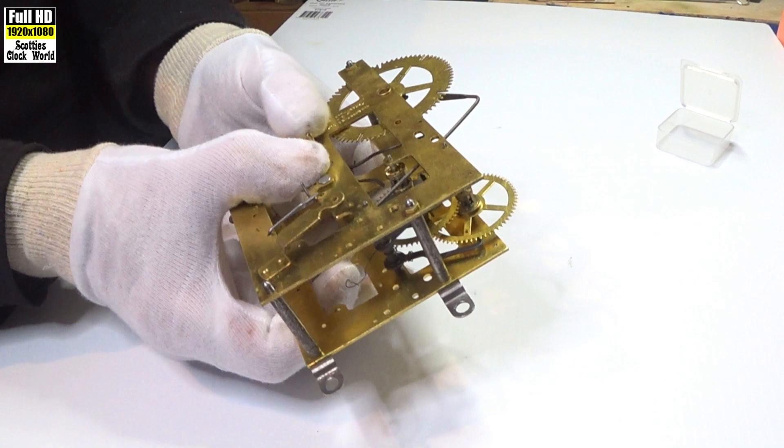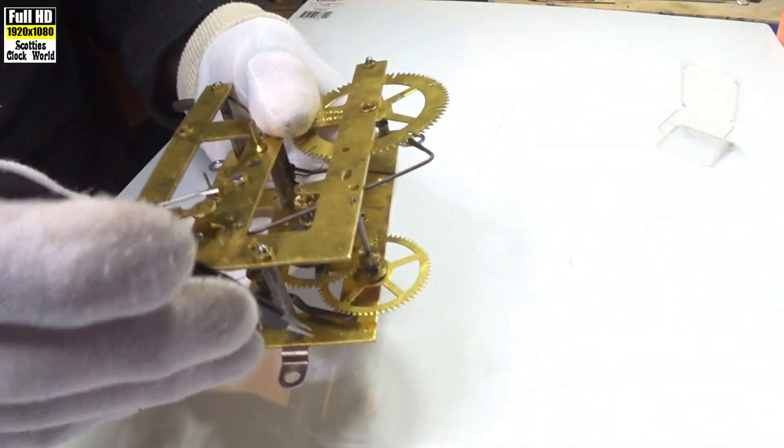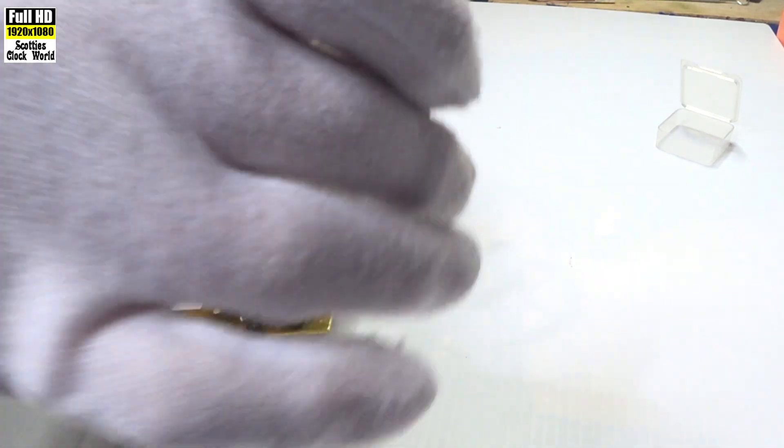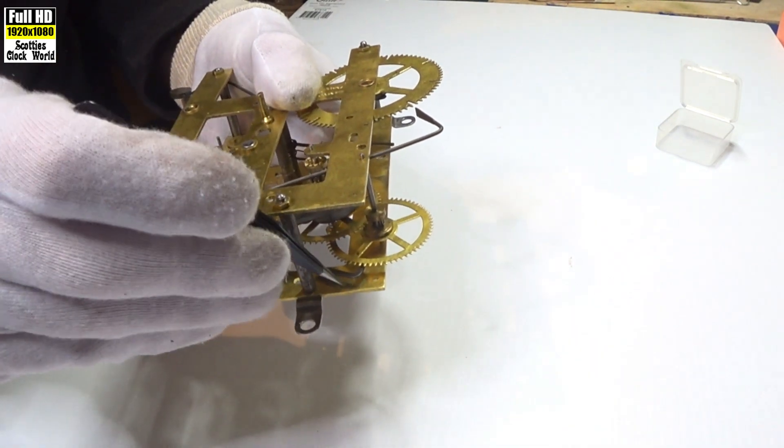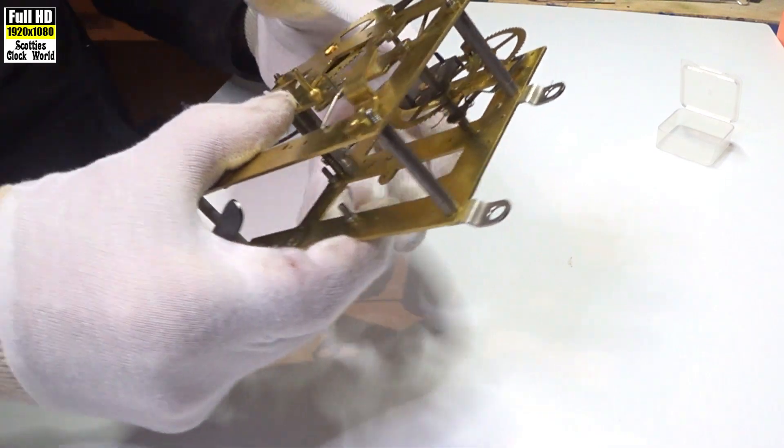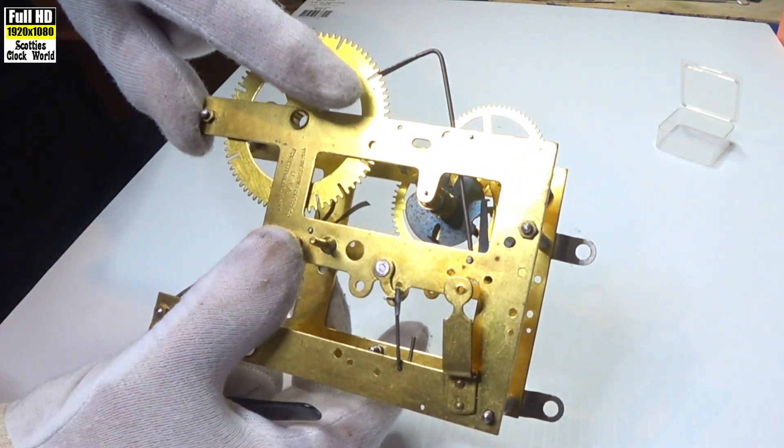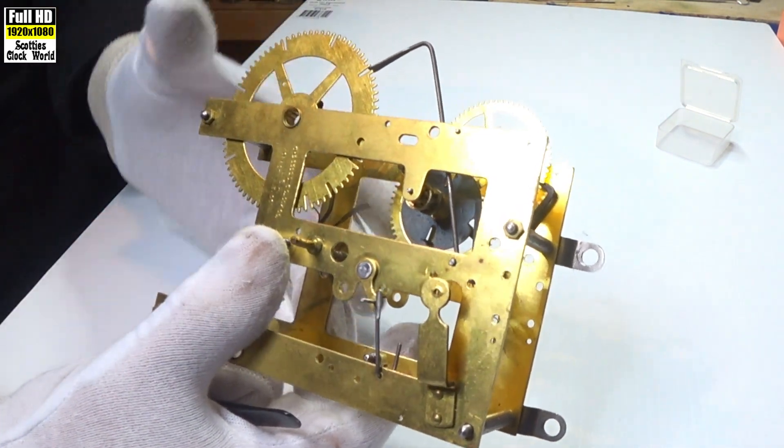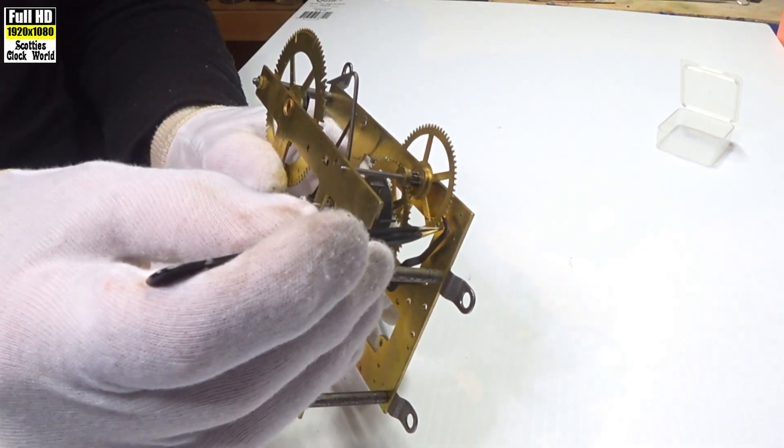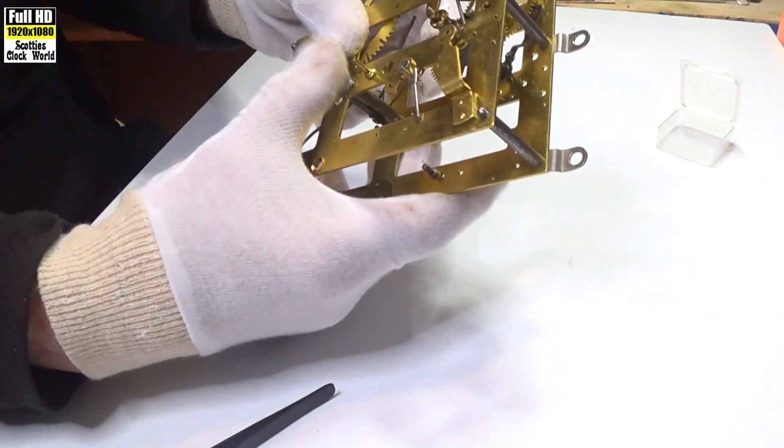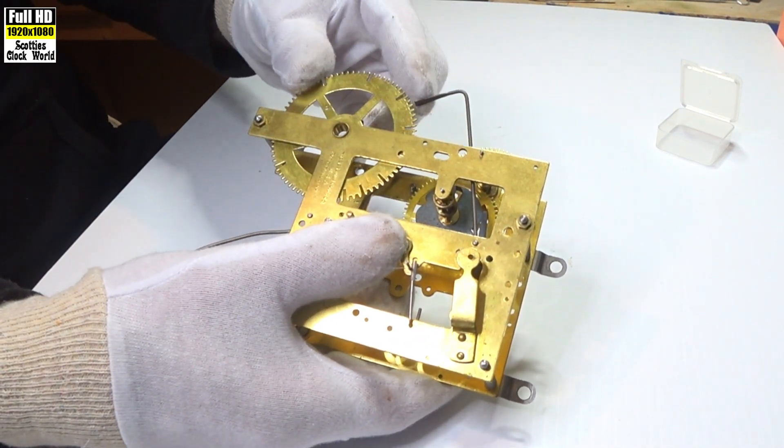As the maintenance cam turns, it lifts this lever here up, starts to lift it up, which allows the warning wheel to make one revolution, like so. Then it's rearrested by that lever there. You'll notice that the count lever, if you can see it, has lifted up out of the deep slot there and is ready to strike. As the maintenance cam turns a little bit more, the third lever is lifted, goes out of warning. And as it turns, the count lever comes up and down as this wheel turns here.